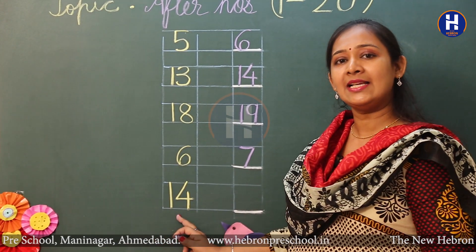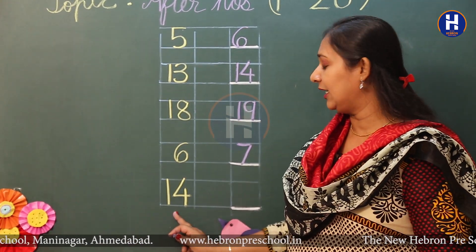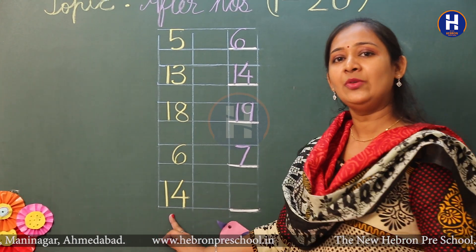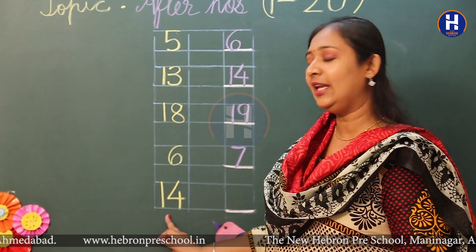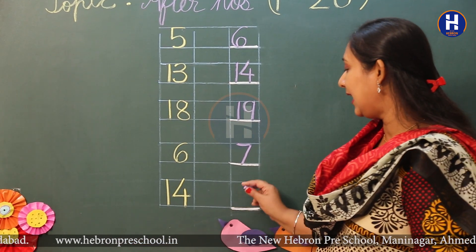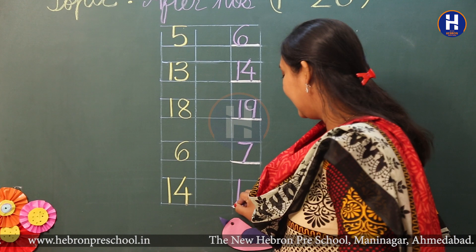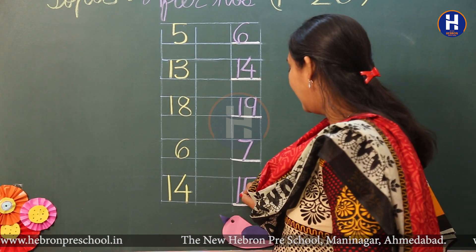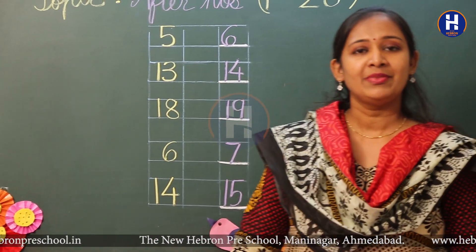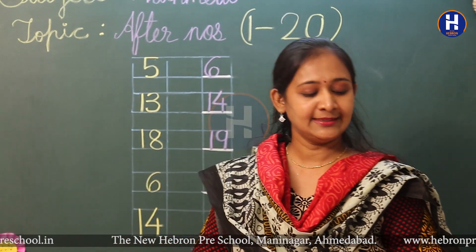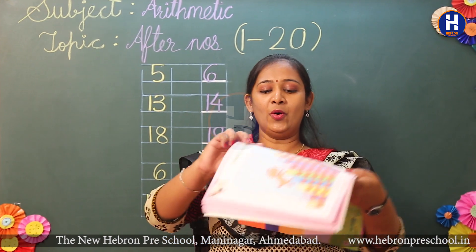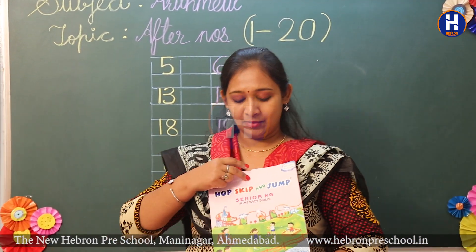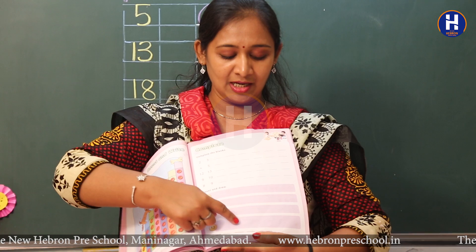Now this is the last number — number fourteen. So let's do counting: eleven, twelve, thirteen, fourteen. And what comes next? What is the after number of fourteen? Yes, it is number fifteen. So got the concept clear? Now I am going to give you homework — in numeracy skill book do page number forty-one. Thank you.